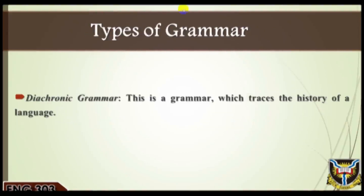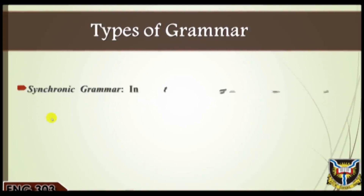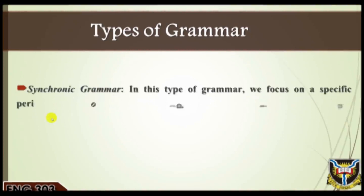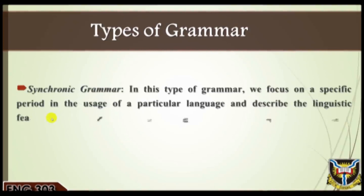Types of grammar: There are also different types of grammar. One: diachronic grammar. This is a grammar which traces the history of a language. It may trace the etymology of a word or the behavior of a particular linguistic element, providing relevant information on the different forms it takes at each stage before it arrives at the form it currently features.